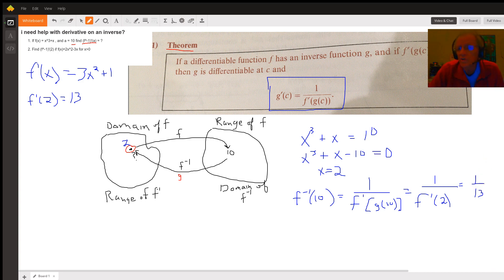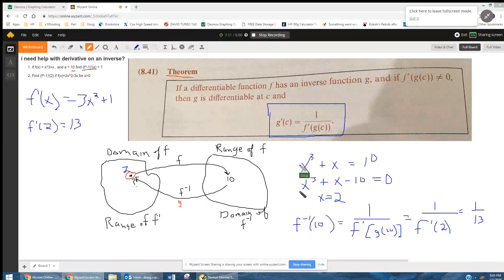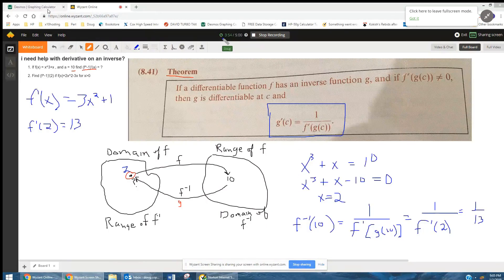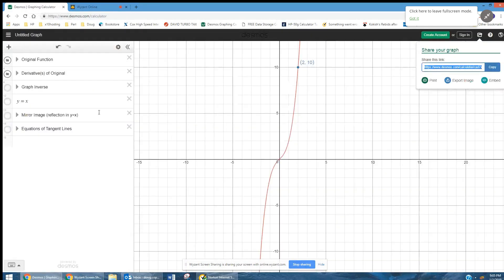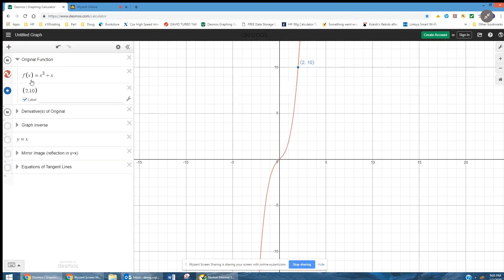But I'm going to share my screen, go to Desmos and show exactly what's going on here. Here I've graphed the original function, f of x equals x cubed plus x. And I proved that the point 2, 10 does lie on the graph.